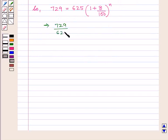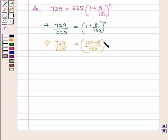This implies 729 upon 625 equals (1 plus 8 upon 100) raised to power N, which equals (100 plus 8) upon 100 raised to power N, which equals 108 upon 100.